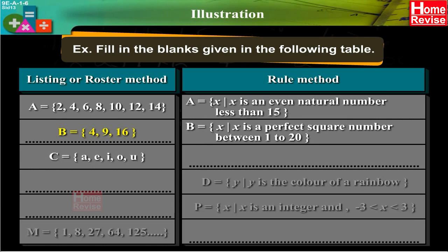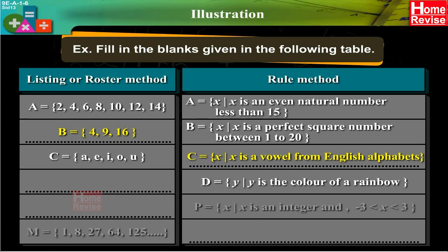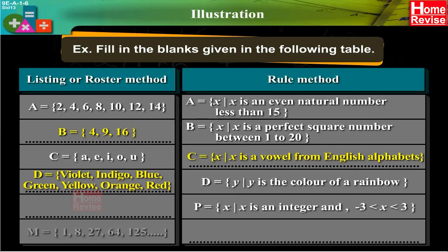Rule method: D = {y : y is the color of a rainbow}. Roster method: D = {violet, indigo, blue, green, yellow, orange, red}. Rule method: P = {x : x is an integer and −3 < x < 3}. Roster method: P = {−2, −1, 0, 1, 2}.